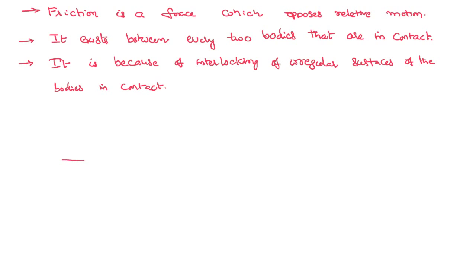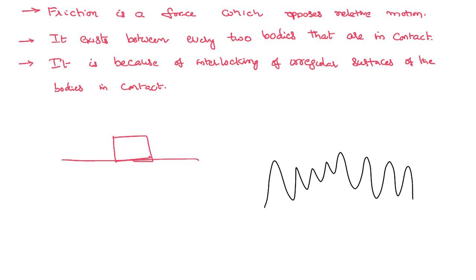On the surface of this body, let us imagine that you have kept another body. So to a normal eye it looks smooth, but if you see it under a powerful microscope, the body is not actually as smooth as it appears. The lower body and the upper body both have irregular surfaces under a powerful microscope, and you can see that those irregular surfaces are coming into contact and somewhere they are getting interlocked. Where they get interlocked simply depends on how that surface is.